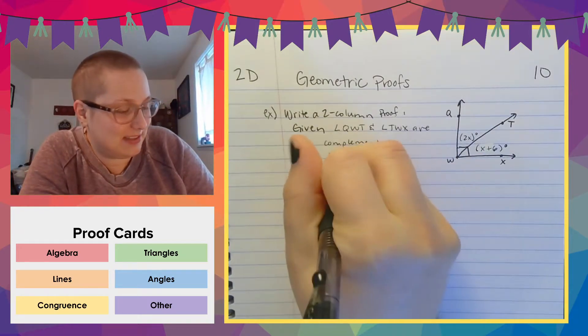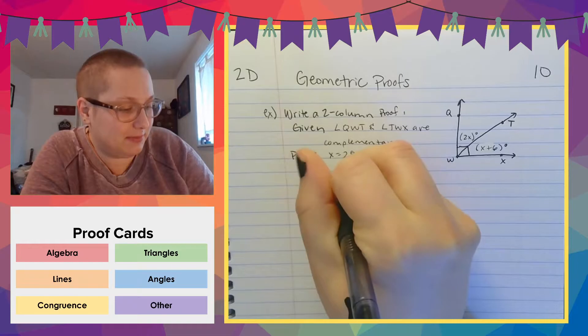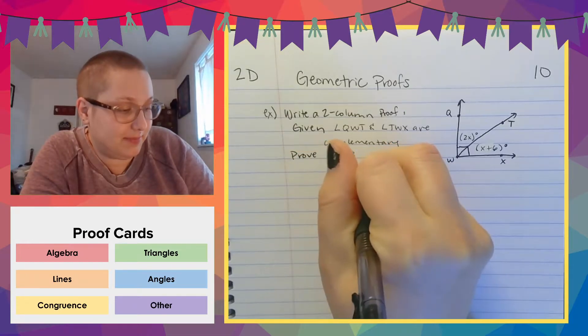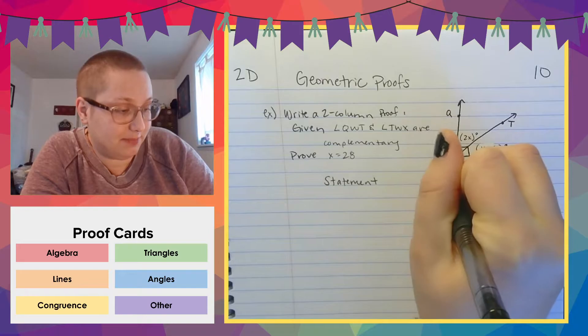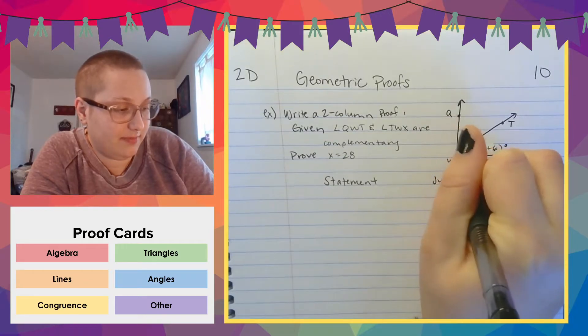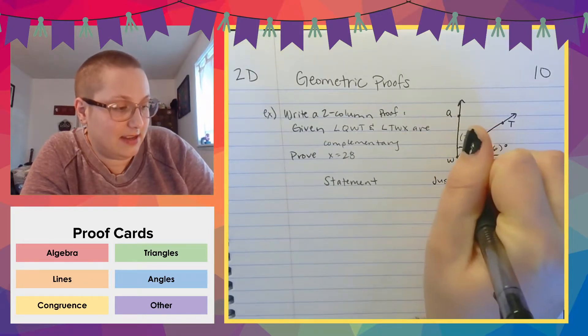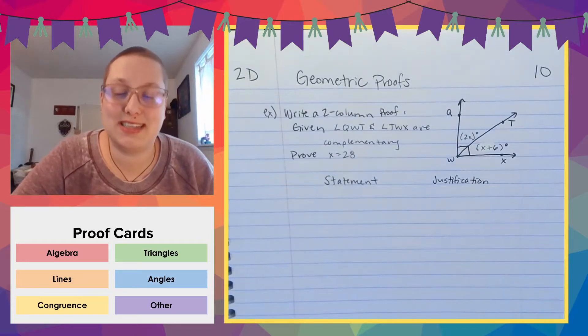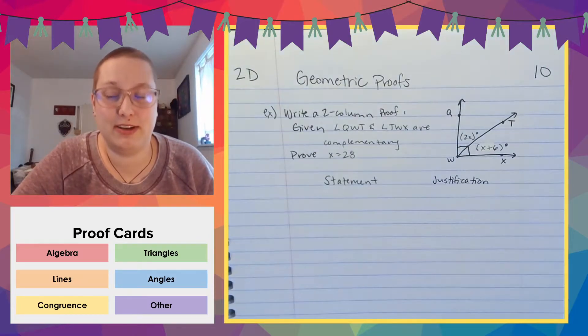Here's, we're going to do the same kind of proof. That's two column proof. By the way, in your textbook, section 2.6 introduces the idea of paragraph and flow chart proofs.